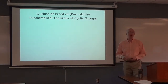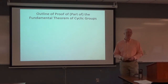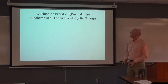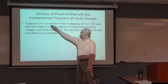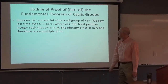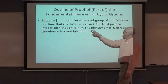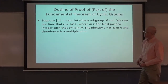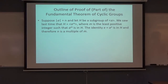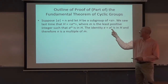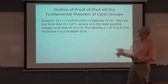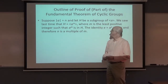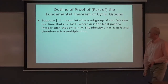Last time we looked at proving the part of the fundamental theorem of cyclic groups that says every subgroup of a cyclic group is itself cyclic. We verified that if the order of a is some positive integer n, and h is an arbitrary subgroup, then h equals the group generated by a^m, where m is the least positive integer such that a^m is in h. Since the identity equals a^n and is in h, n is a multiple of m.